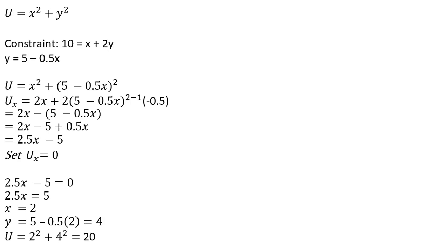So here again, we're going to check the second order condition, taking the second derivative of the utility function with respect to x. Just this result right here, 2.5x minus 5. So the derivative of that is 2.5. That is positive, so we're not at a maximum, so we need to check corner solutions.